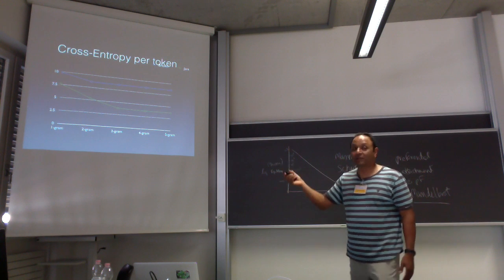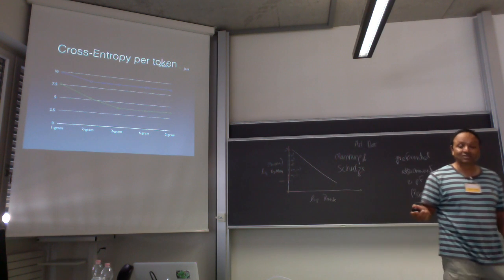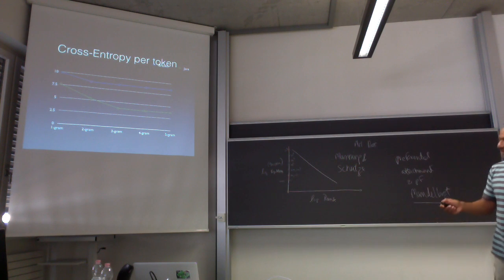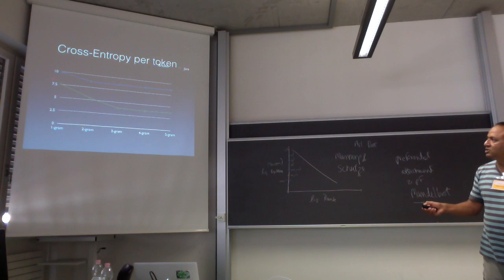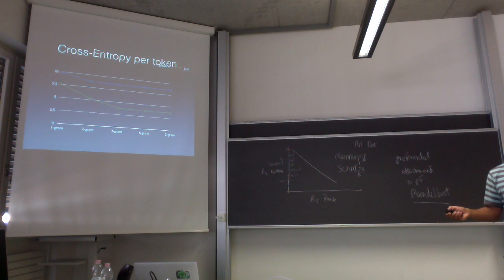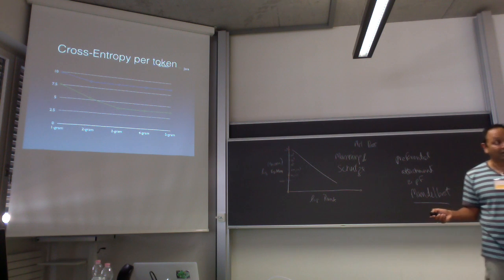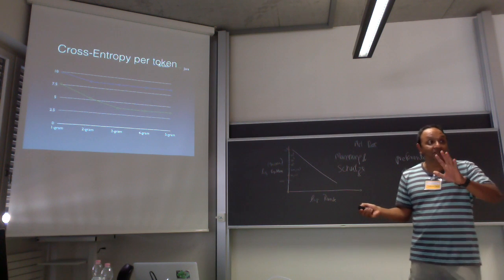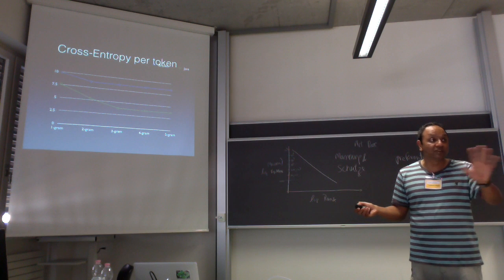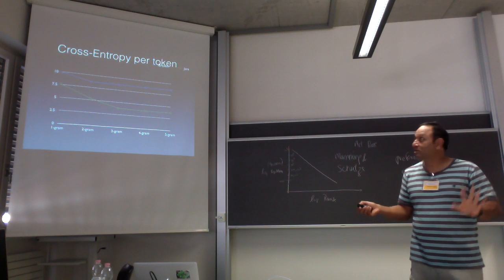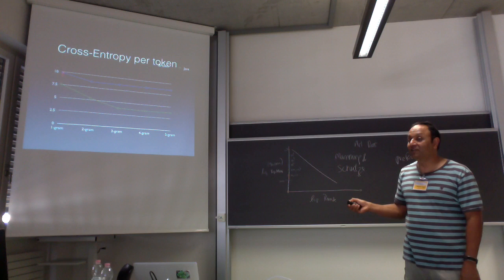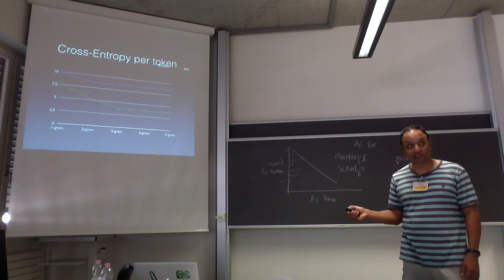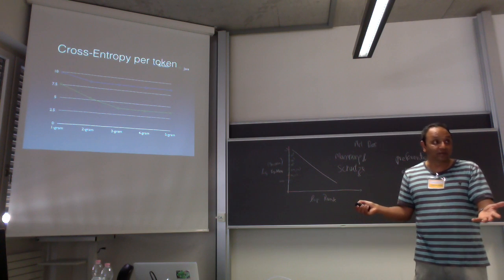This is really surprising. What this is telling you is that at the unigram level, each token of code has 7.5 bits of information. Now, code roughly has two to three times the vocabulary of English. So in fact, code is two and a half times more predictable than English, despite having a larger vocabulary.